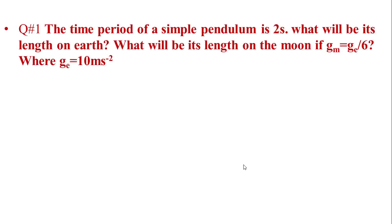Question No. 1: The time period of a simple pendulum is 2 seconds. What will be its length on the surface of Earth, and what will be its length on the Moon? The gravitational acceleration on the surface of the Moon is 1/6 of the gravitational acceleration on the surface of Earth, so gm equals ge divided by 6, where the value of ge, the gravitational acceleration on Earth, is 10 meters per second squared.